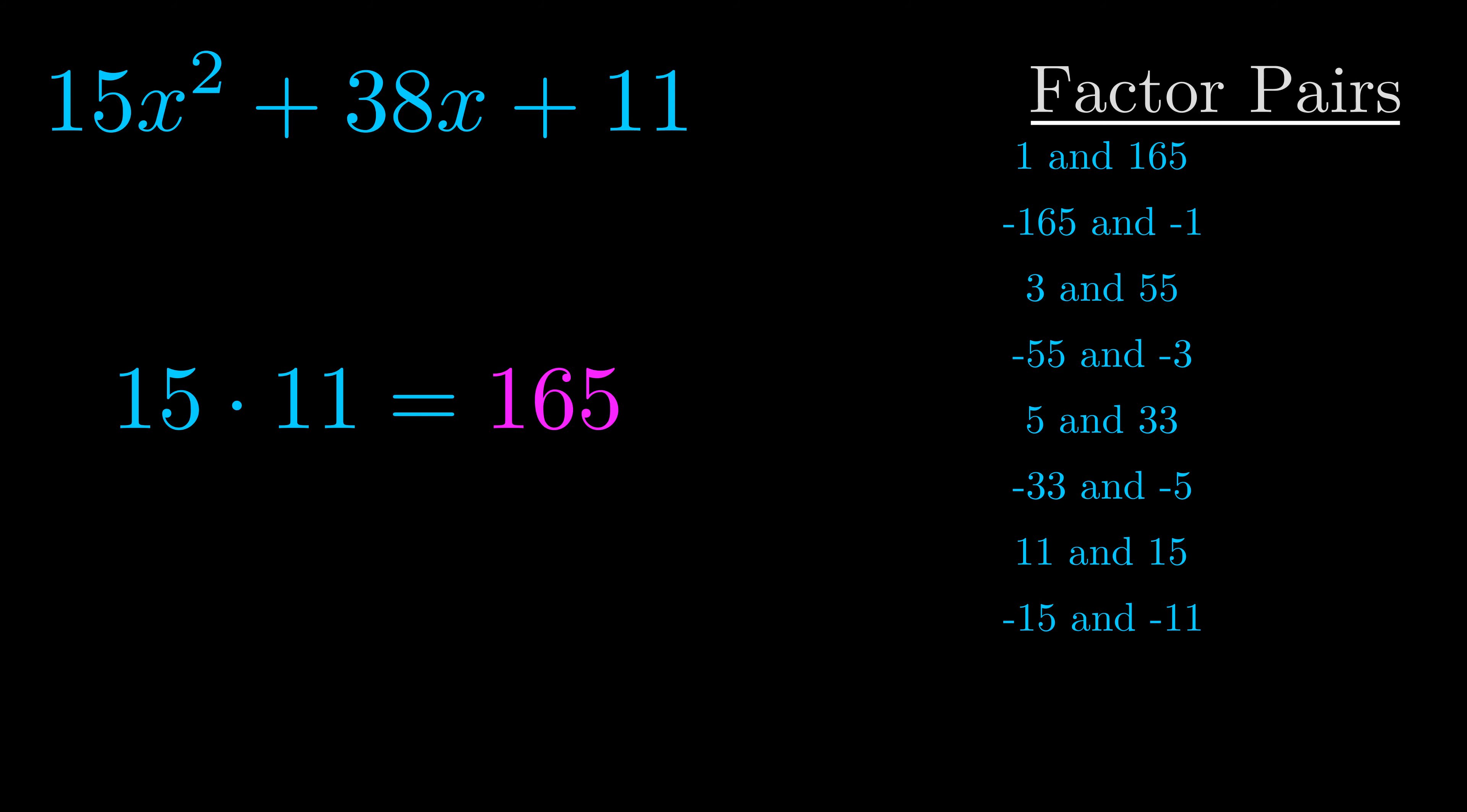The b value is the coefficient on the x term. That's the middle term, the one that we haven't done anything with yet. And really this is the only factor pair that we need.